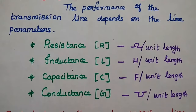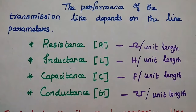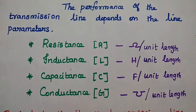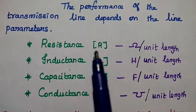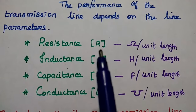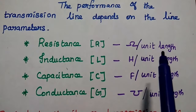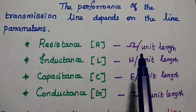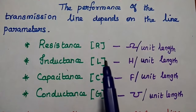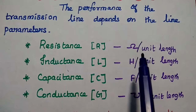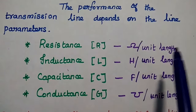There are four transmission line parameters used to describe the performance of the transmission line. The first one is resistance, denoted as R. It is measured in terms of ohms per unit length. Since we are talking about a transmission line, we have to measure the parameters with respect to unit length, where the unit length is kilometer.